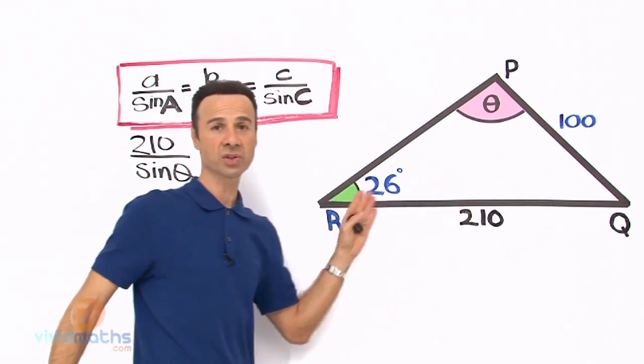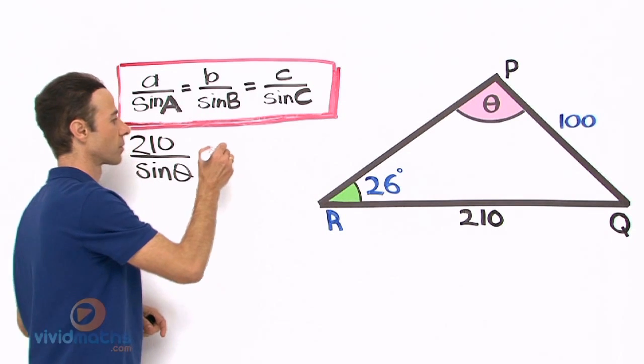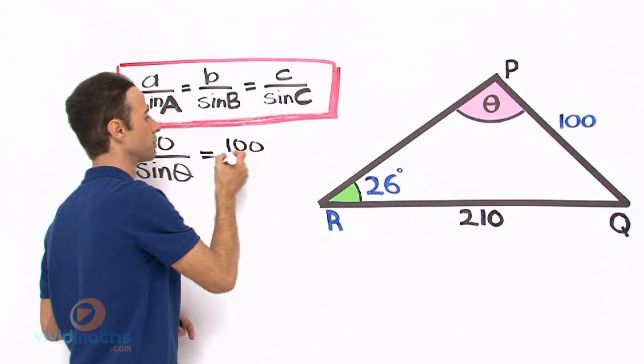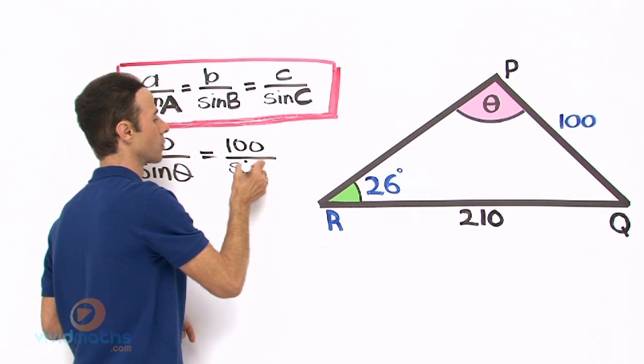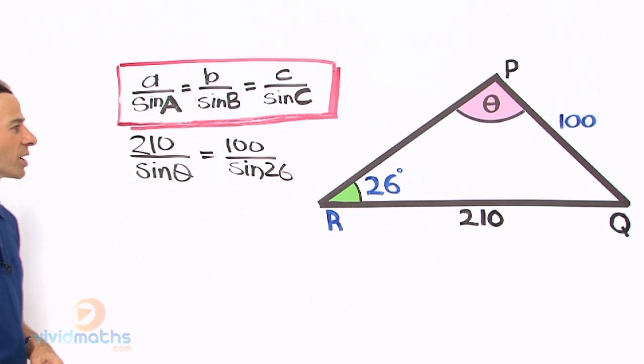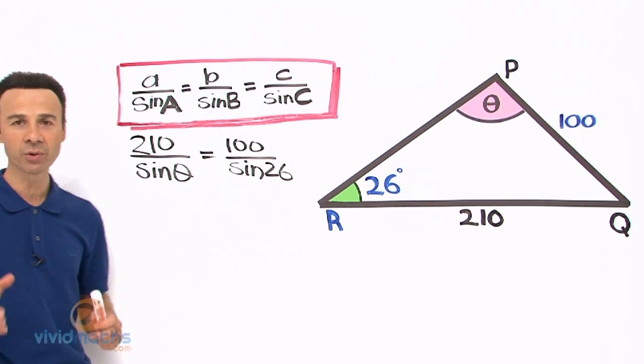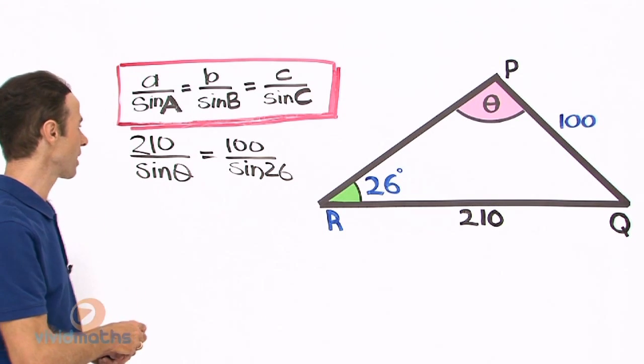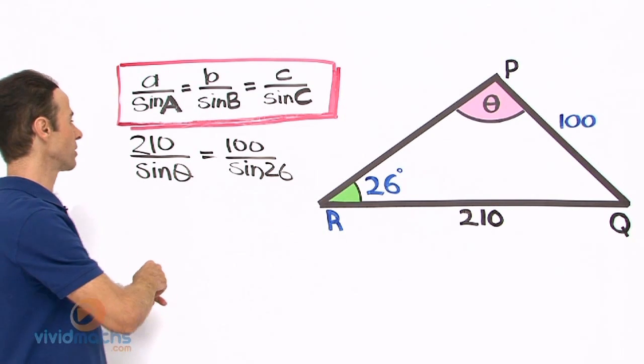So first of all we are going to get the basic equation. Let us do what we normally do with sine rule and that is to cross multiply.